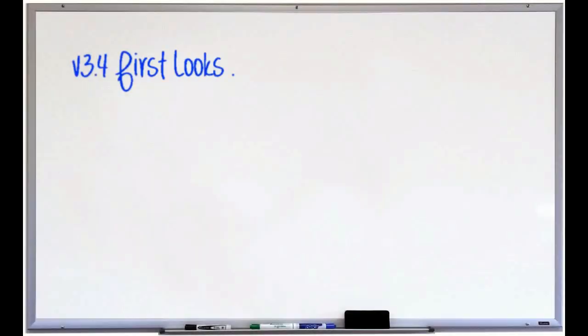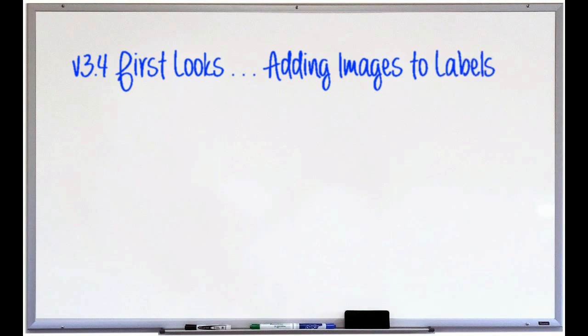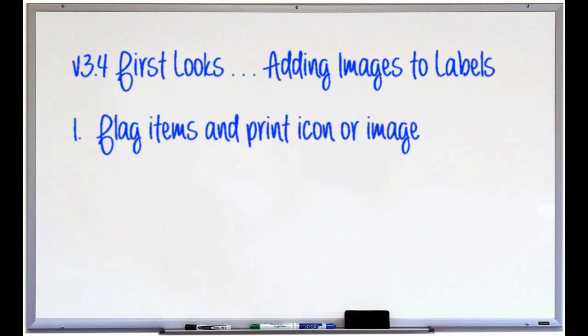Hey guys, in this week's tip we're going to start a continued series with some first looks at some of the new features of SMS 3.4. Up first, we're going to take a look at one of those things that a lot of people have asked about: how do I add images to the shelf labels that I create in my store? Step number one we're going to review is flagging items and printing either an icon or an image that we identify within item maintenance. It's pretty cool.